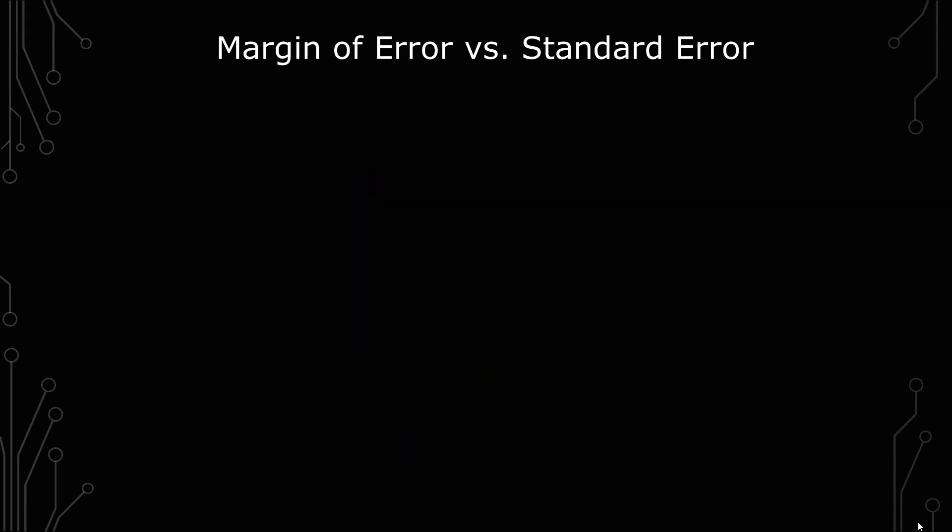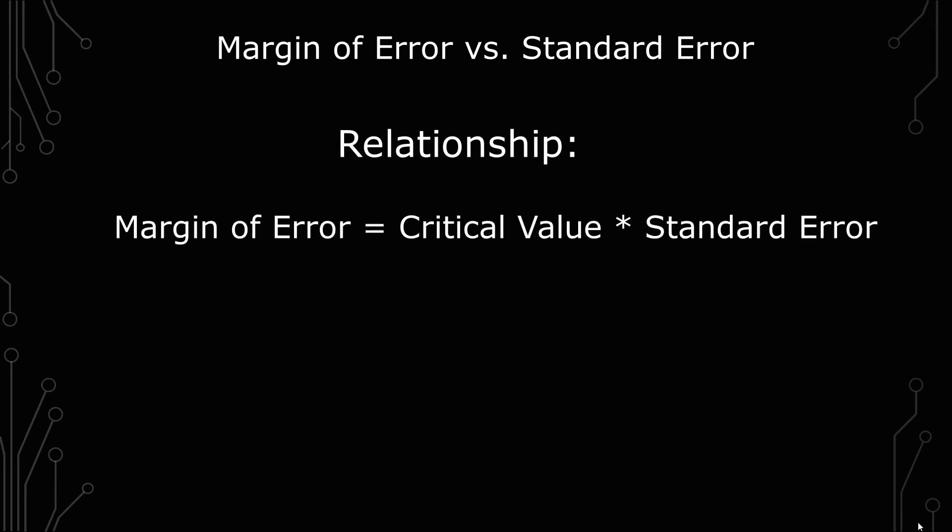The very simple definition and the relationship between standard error and margin of error is this: The margin of error is the critical value, whether it's the T or the Z distribution, times the standard error.